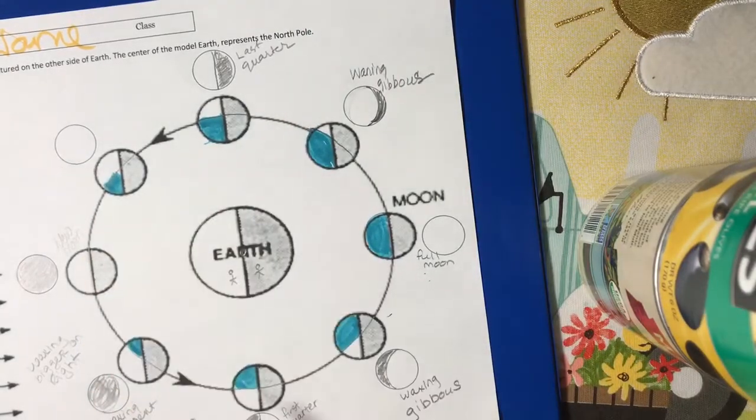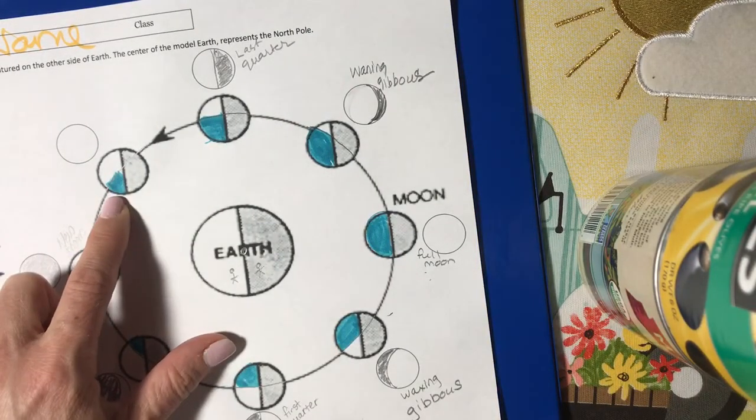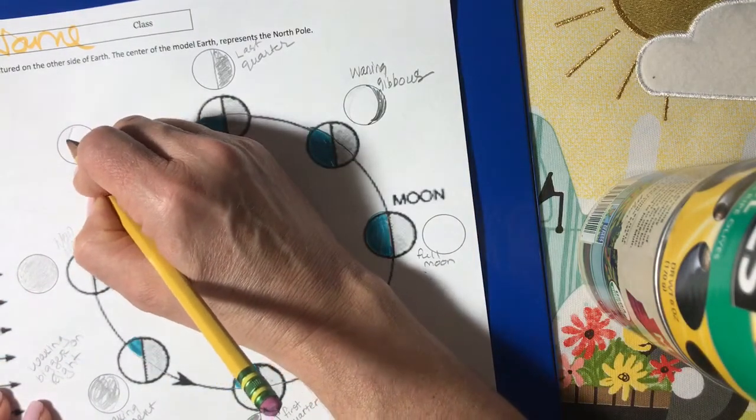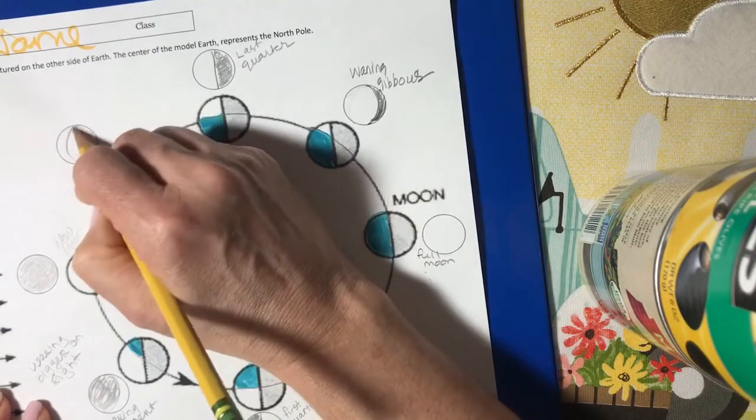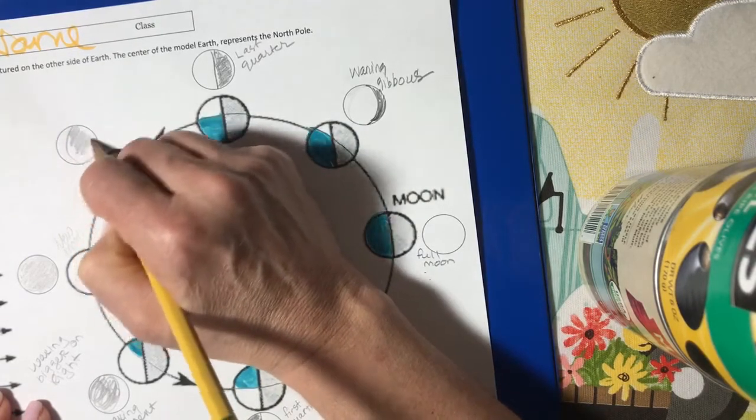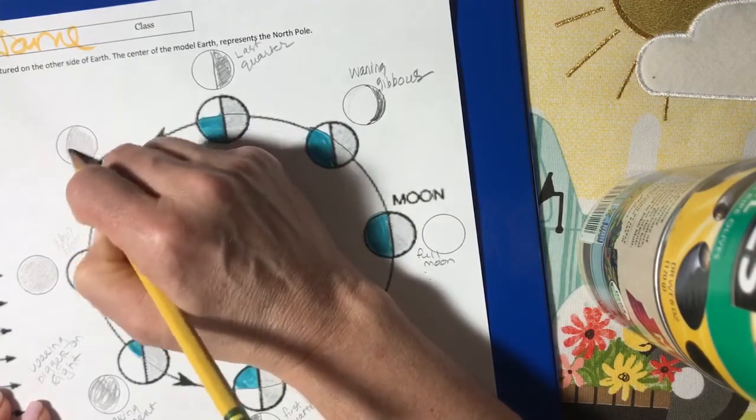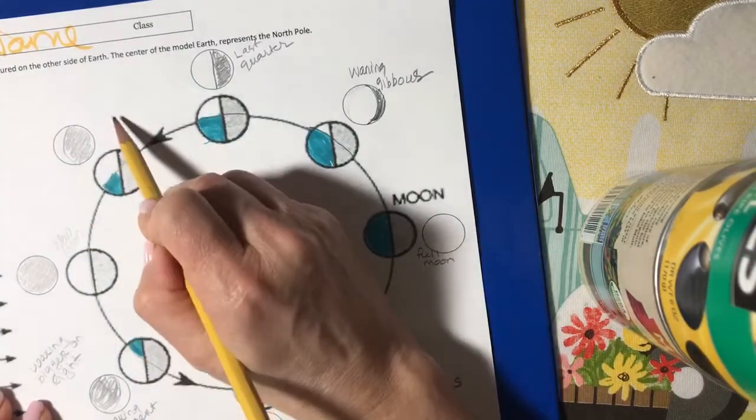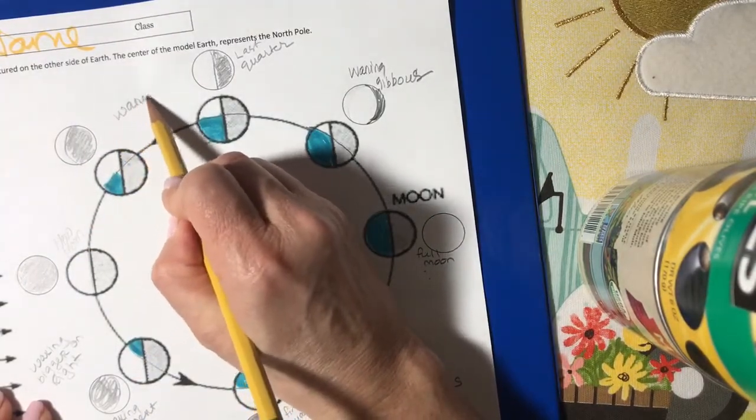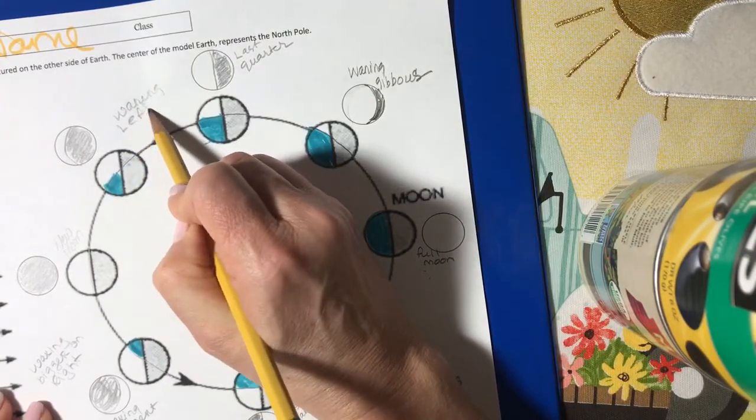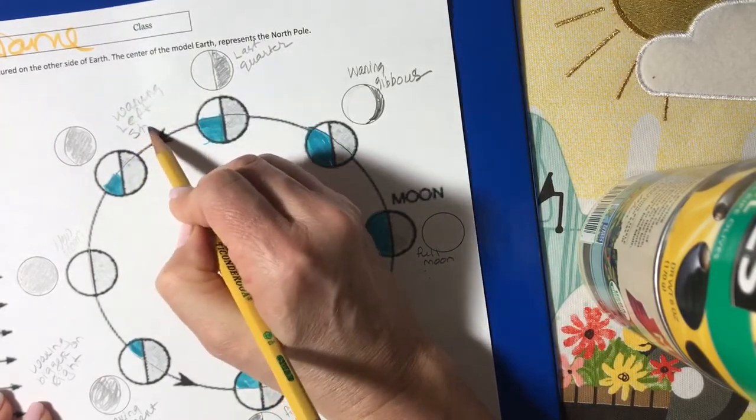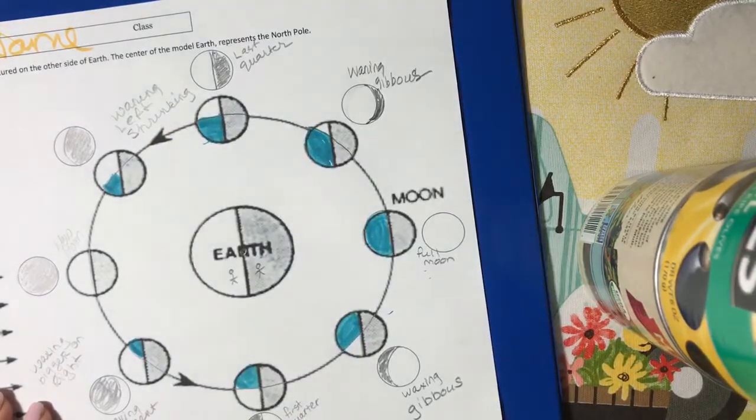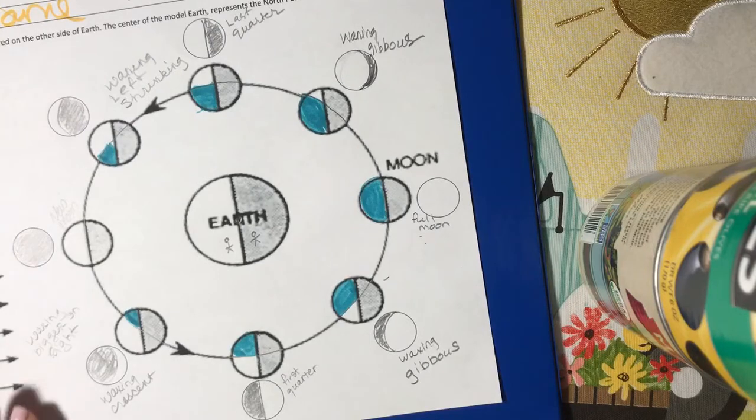From here to here, just a little tiny bit is lit on the left hand side. So I'm going to fill that and leave the left. Waning left, and the moon is shrinking. The left side is lit and the moon is shrinking.